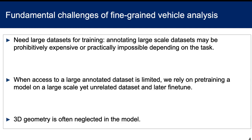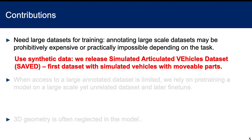We also wish to come up with a better way to exploit information regarding the 3D geometry of the scene and the objects during training. In this work, we present a synthetic dataset — a simulated articulated vehicles dataset, or SAVED — which is used to train a model for recognizing vehicle parts and estimating vehicle orientation.